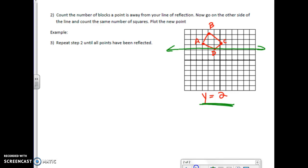Now, I'm going to count the number of blocks a point is away from the given line of reflection. So let's focus on C. C is 1 block away, so I'm going to go 1 block on the opposite side to get my new point to be at C prime.